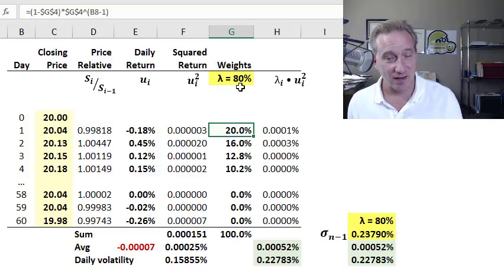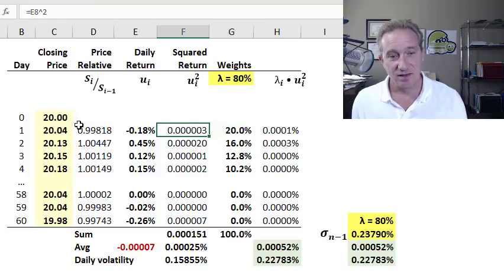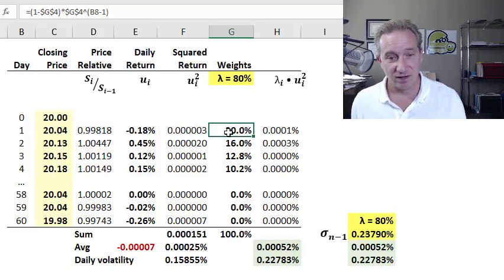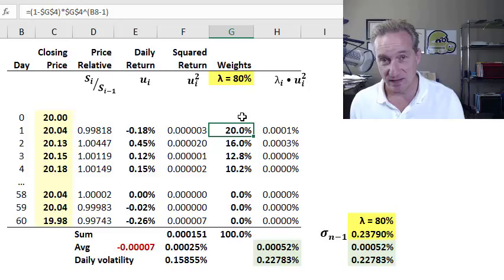And what it means is that if I have a lambda of 80%, then the weight assigned to the squared return on yesterday, day n minus 1, gets a weight of 1 minus lambda, or in my case, 20%.